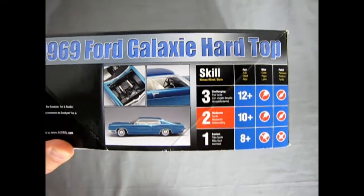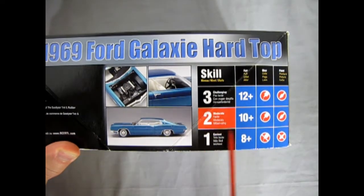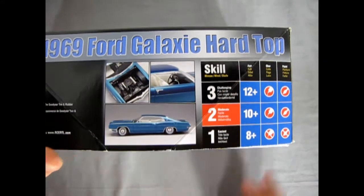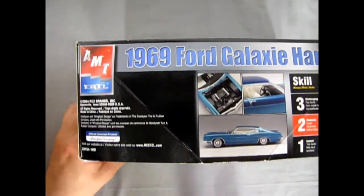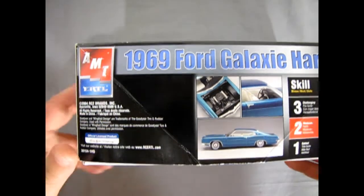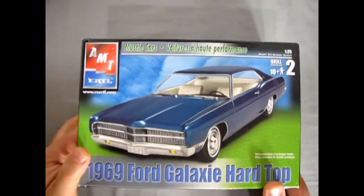And on this side of the box we have a skill level 2 for just 10 and up. Glue and paint is required. This model kit came out in 2004 from RC2, official licensing by Ford. So we're turning around upside down. Here we go.